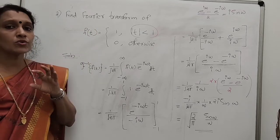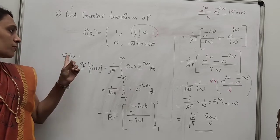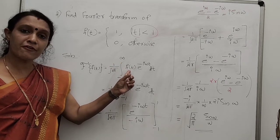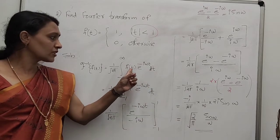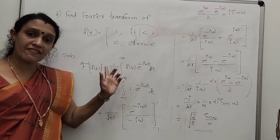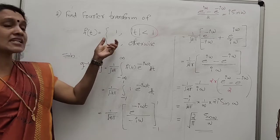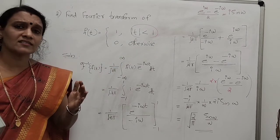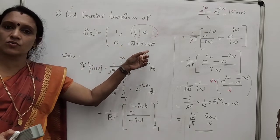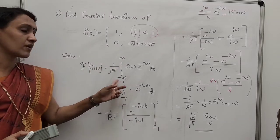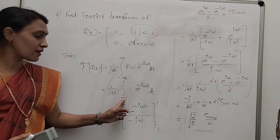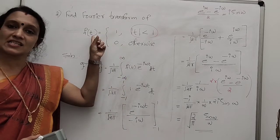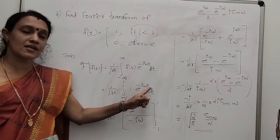We write the definition of Fourier transform: F(ω) = (1/√(2π)) × integral from minus infinity to infinity of f(t) × e^(-iωt) dt. Since f(t) = 0 outside (-1,1), all other integrals vanish and we write only the integral from -1 to 1 of 1 × e^(-iωt) dt.